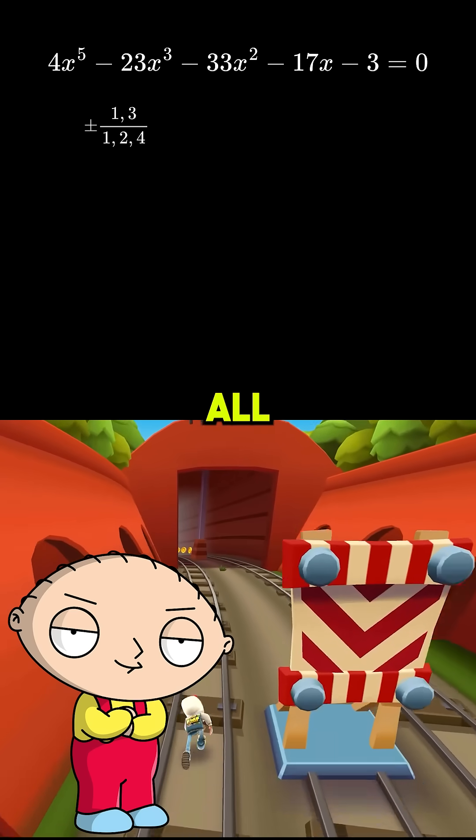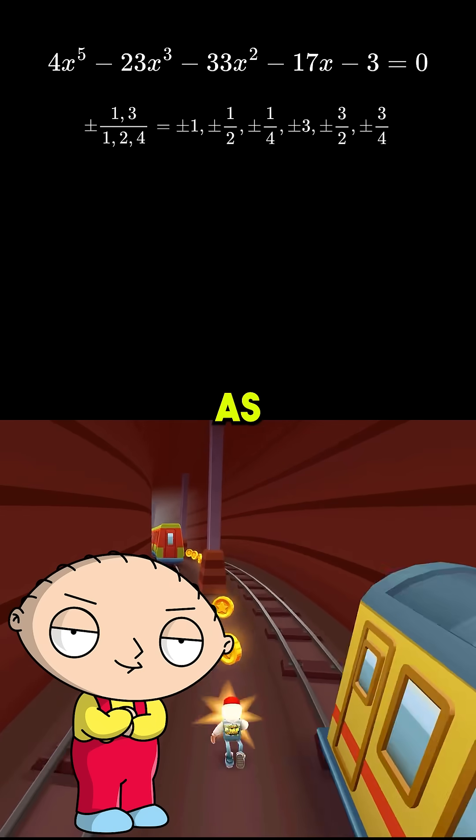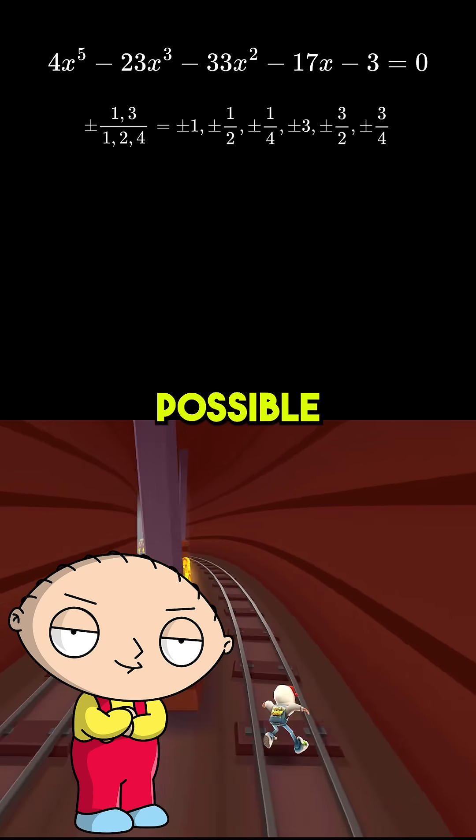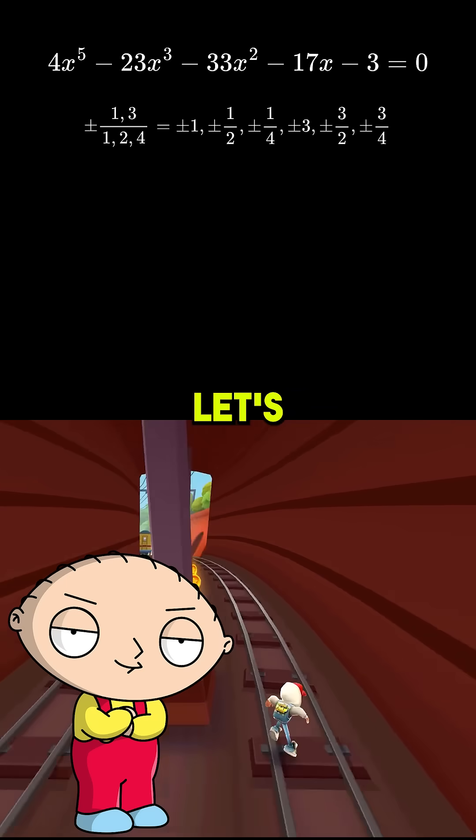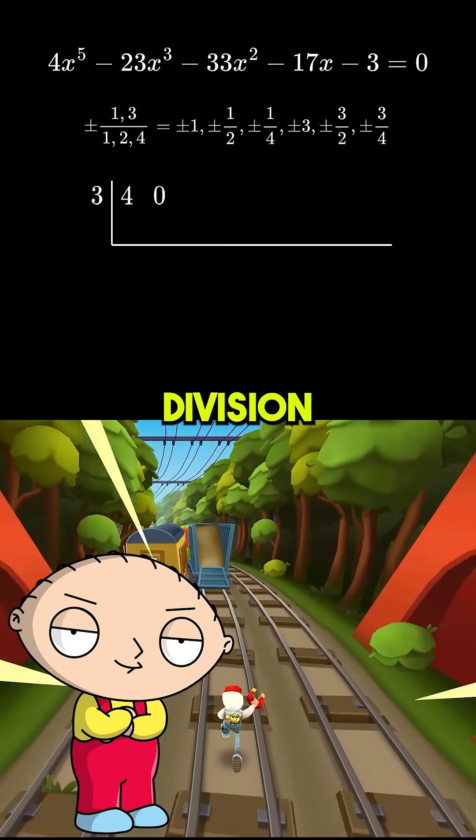Now, we make all the possible fractions. We do it like this. As you can see, we have 12 possible roots. So we just have to do trial and error. Let's say we choose 3. Then, we do synthetic division.